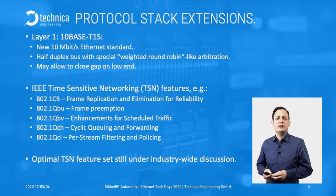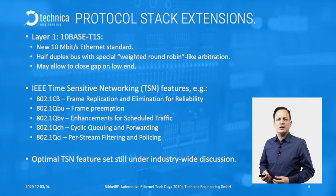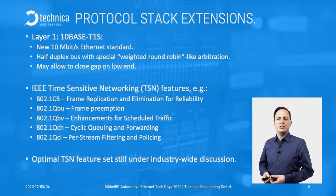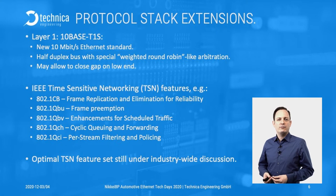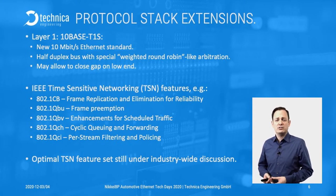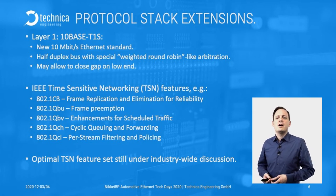The second thing to look into is time-sensitive networking. There are multiple layer 2 enhancements starting to show up in Ethernet semiconductors, especially in switches. The first is 802.1CB — Frame Replication and Elimination for Reliability. It allows you to run frames over multiple links redundantly, giving you Ethernet-level redundancy. You might not need that in many use cases because you may have system-level redundancy — an Ethernet and a FlexRay on the other side, or two different Ethernet links with different messages. However, if you need Ethernet-level redundancy, 802.1CB can help.